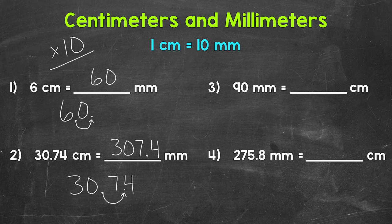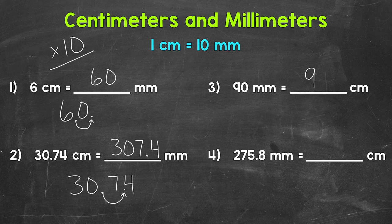Let's move on to number 3, where we have 90 millimeters equals how many centimeters? Each group of 10 millimeters equals a centimeter, so we need to see how many groups of 10 are in 90 — in other words, 90 divided by 10. 90 divided by 10 is 9. So 90 millimeters equals 9 centimeters. When we go from millimeters to centimeters, we divide by 10.